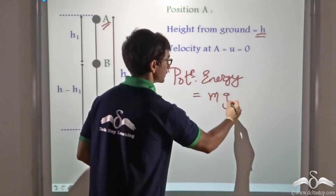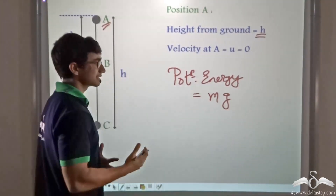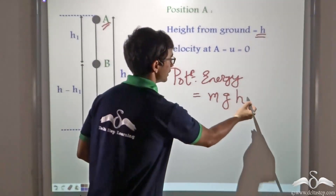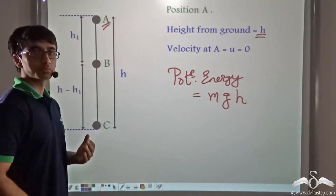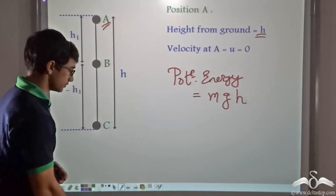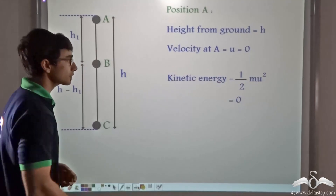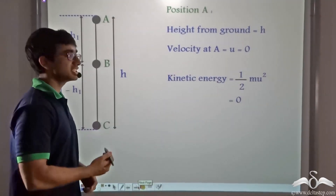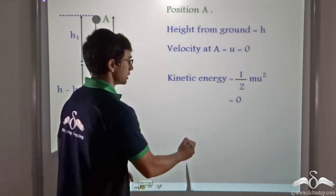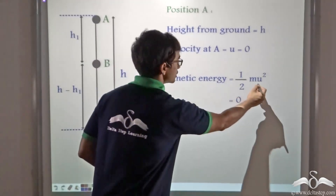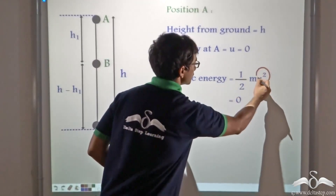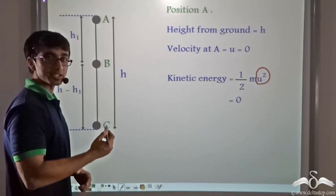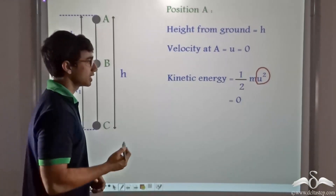Also we can say that the kinetic energy is zero. Why? Because U — that is the velocity at A — is zero because the ball is at rest. Thus the kinetic energy is zero. Also we found out that the potential energy is M × G × H.